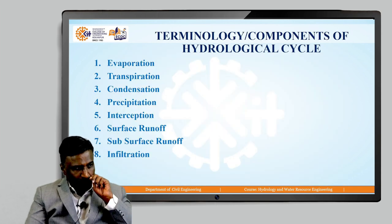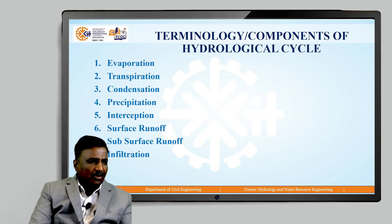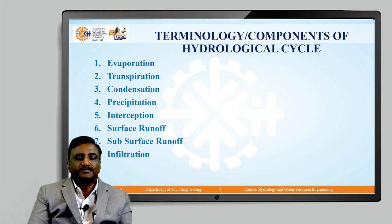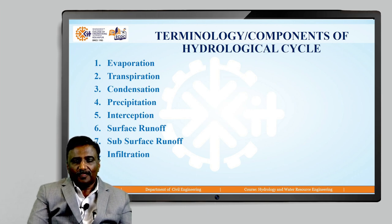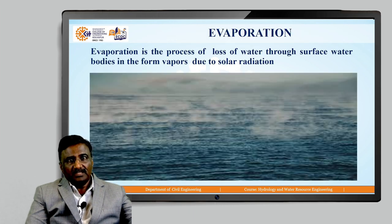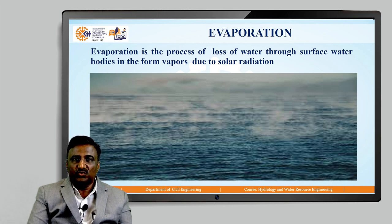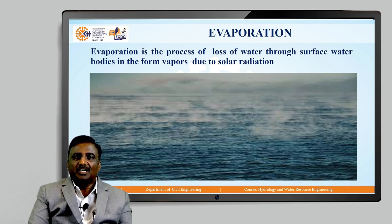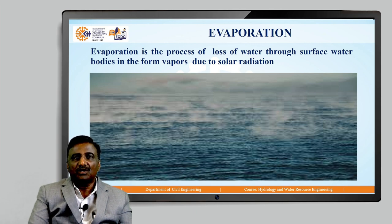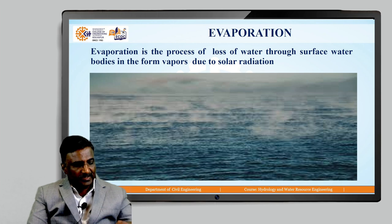Next, we will move to the terminology or components of the hydrological cycle. First, evaporation: evaporation is the process of loss of water through surface water bodies in the form of vapors due to solar radiation. You can see in the image how liquid water is transferred into vapor and moves in an upward direction.